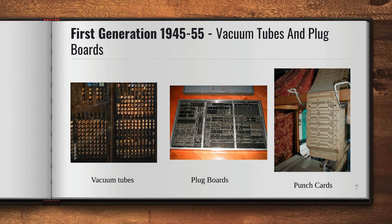In the first generation of the operating system, we had vacuum tubes and plug boards. Digital computers were not really constructed until World War II. Calculating engines with mechanical relays were built, but later they were replaced by vacuum tubes because of the slow speed. All the problems were simple calculations with no operating system. By the 1950s, punch cards were introduced and programs were written on cards.